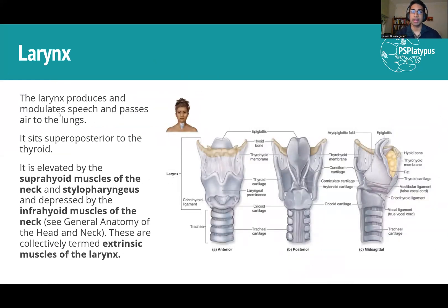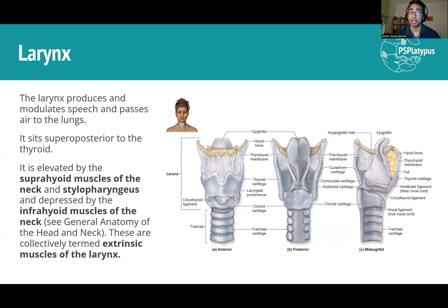The larynx has two important functions: it produces and modulates speech — this is where your voice actually originates, though your mouth and lips form actual words — and it protects the airway. Note anatomically that the thyroid gland doesn't sit directly anterior to the thyroid cartilage; it's inferior and anterior to it, closer to the cricoid cartilage. Keep that in mind when thinking about anatomical relations here.